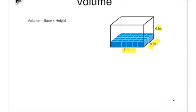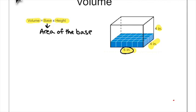We're trying to figure out how many 1-inch by 1-inch by 1-inch cubes can fit inside this rectangular prism. We'll use the formula: volume equals base times height. The word 'base' here means the area of the base. Our rectangular prism has a length of 6 and a width of 4, and area is length times width, so our base is 6 times 4, which equals 24.